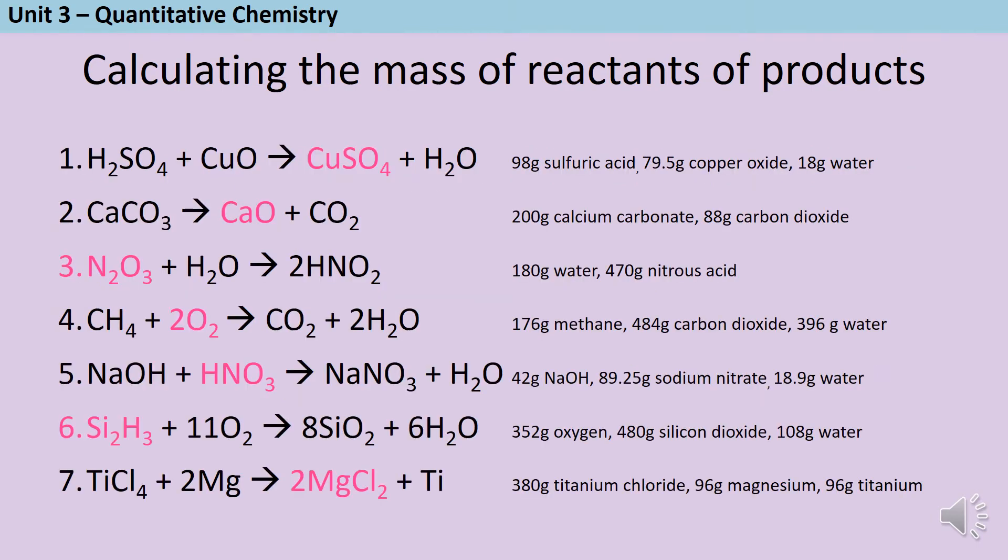Here are seven questions for you to have a go at. In each instance, you're trying to calculate the mass of the pink chemical. You should start out by calculating the total mass on the other side of the equation. Then remember that this will be the same on both sides of the equation and complete the subtraction to figure out what the mass of the missing chemical will be.